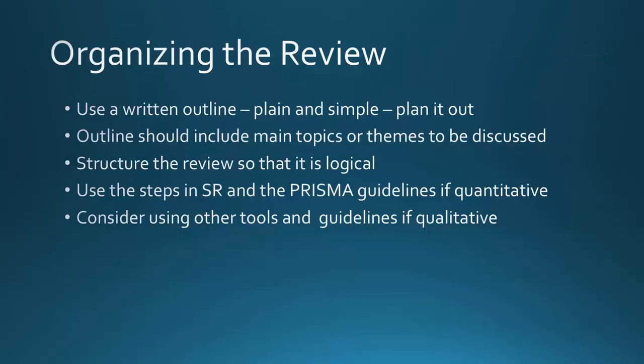Just like any paper, you need an outline — a protocol for your systematic review. You need your main topics and the structure of the review in a logical way. You're going to use the PRISMA guidelines for developing the protocol. PRISMA has two sets of guidelines: one to write your paper and one to write your plan for your paper. The article on the back table includes the PRISMA guidelines for writing the plan. The first couple of weeks, let's work on the plan for the paper.